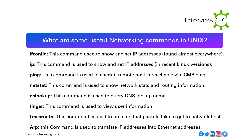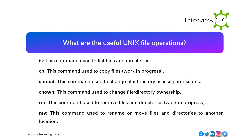ARP: used to translate IP addresses into Ethernet addresses. What are the useful Unix file operations? ls: used to list files and directories. cp: used to copy files. chmod: used to change file/directory access permissions. chown: used to change file/directory ownership. rm: used to remove files and directories.